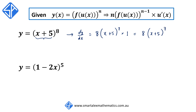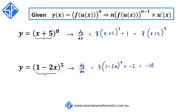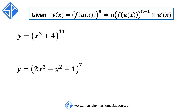For our next example we've got y is equal to 1 minus 2x to the power of 5. Again using the chain rule, we put the power of 5 at the front, we reduce the power of the original function by 1, so we have 5 times 1 minus 2x to the 4, and we multiply by the derivative of what's inside the bracket, which is negative 2. Simplifying this we get negative 10 times 1 minus 2x to the power of 4.